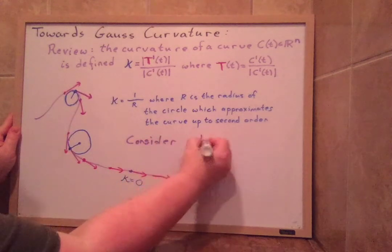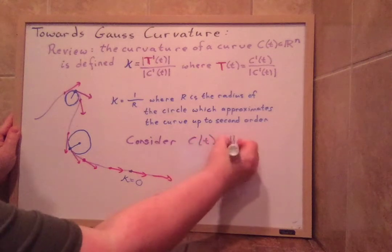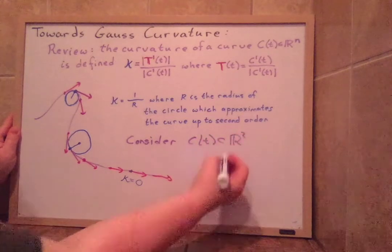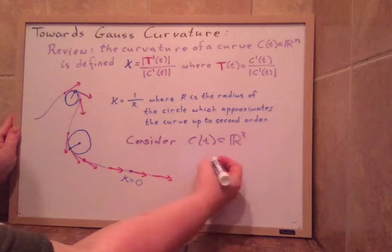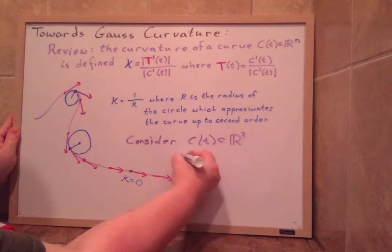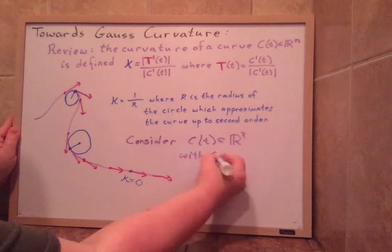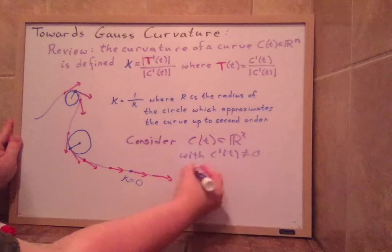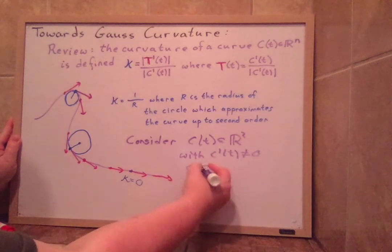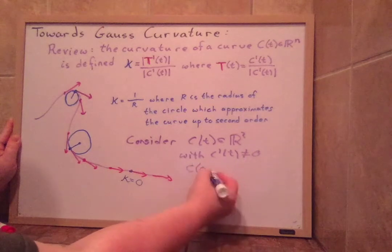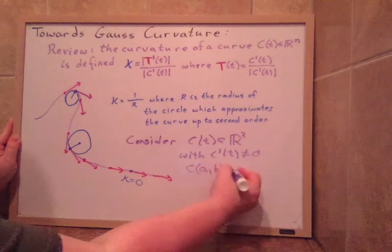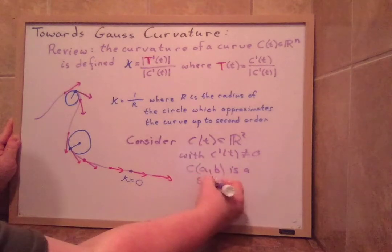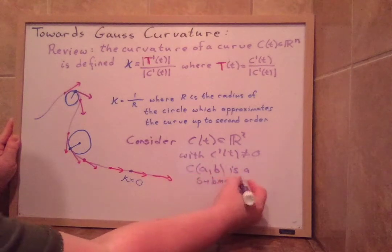C(t) sitting inside R^2. And if C(t) is sitting inside R^2, you could have C'(t) not equal to zero. Then actually C(t), the image C of some [a,b], is a submanifold of dimension 1.